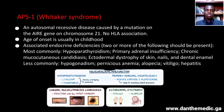Let's take a closer look at type 1. It's an autosomal recessive disease caused by a mutation on the autoimmune regulator gene on chromosome 21. It has no human leukocytic antigen association, and the age of onset is usually in childhood.